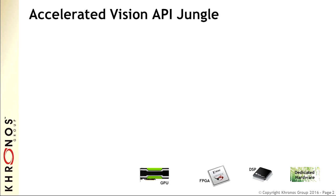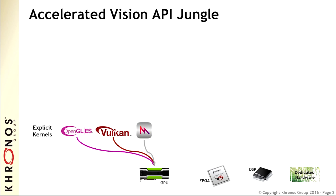For the purposes of this presentation, I'm focusing on the APIs that allow access to hardware acceleration. Different types of hardware accelerator — GPUs, FPGAs, DSPs, and dedicated hardware that are relevant to the embedded vision space. Let's look at the different APIs and see how they let you access these different processor types.